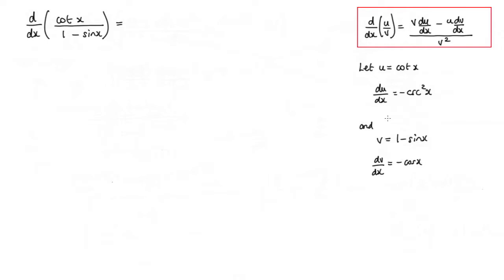So let's pop these into the formula over here. So we've got v times du dx, so 1 minus sin x times by negative cosec squared x.